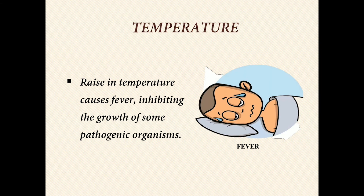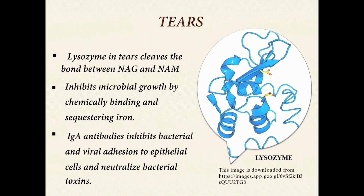Physiological barrier — temperature: a raise in temperature causes fever, inhibiting the growth of some pathogenic organisms. Tears: lysozyme in tears cleaves the bond between NAG and NAM in the peptidoglycan component of the bacterial cell wall. Lactoferrin inhibits microbial growth by chemically binding and sequestering iron. IgA antibodies inhibit bacterial and viral adhesion to epithelial cells and neutralize bacterial toxins and viruses, both extra- and intracellularly.